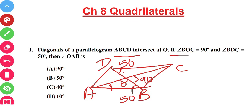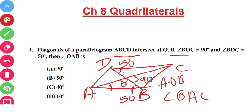In triangle AOB, by the angle sum property of a triangle, the value of angle BAC will be 180 minus (90 plus 50), which gives 180 minus 140 = 40 degrees. So the answer is 40 degrees — option C is correct.